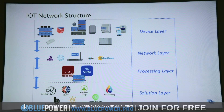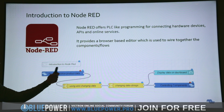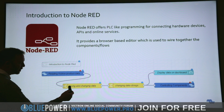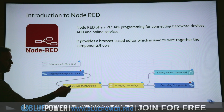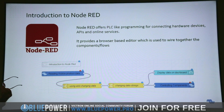Node-RED is a PLC-based program built into the Venus GX. It connects hardware, APIs, and online services, and provides a browser-based editor. You have a Victron product and these little nodes you connect to each other. From here we're reading information from that Victron product - it comes into a switch, function, or change node. We use those to change the data, for example putting out power values or state of charge values and changing it to another signal.